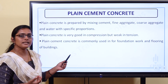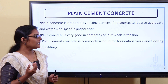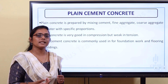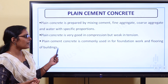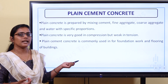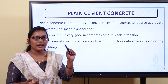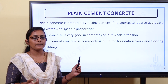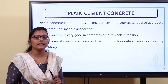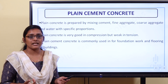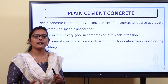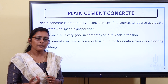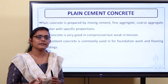The first type is PCC — Plain Cement Concrete — which is made of cement, fine aggregate, coarse aggregate, and water. This is the normal type of concrete. We use PCC for the foundation and the floor of buildings. Now, the drawback of PCC: it is very good in compression but weak in tension. That's why, where tension forces are involved, PCC alone is not used in load-bearing structures.